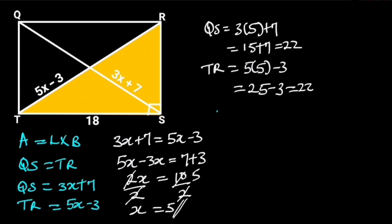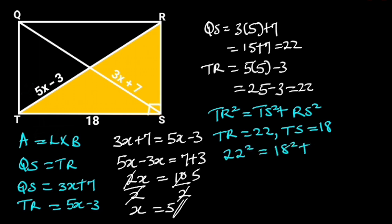From Pythagoras theorem, TR squared is equal to TS squared plus RS squared. TR is 22, and TS is 18. If we plug in these values in this equation, we will have 22 squared is equal to 18 squared plus RS squared.